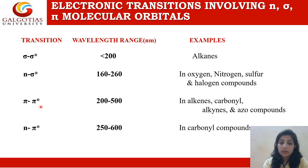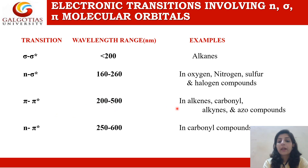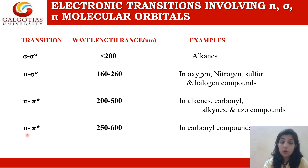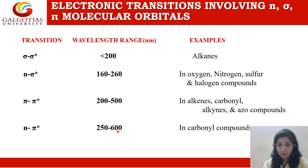Next we have the pi to pi star transition. This involves the transition of pi electrons to the pi antibonding orbital, and occurs at a wavelength range from 200 to 500 nanometers. This transition occurs in alkenes, carbonyl, alkynes, and azo compounds. Next, the n to pi star transition involves transition of non-bonding electrons to the pi antibonding orbital, occurring at a wavelength range from 250 to 600 nanometers, in carbonyl compounds.